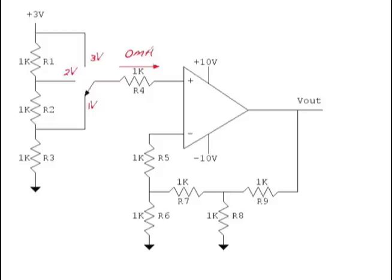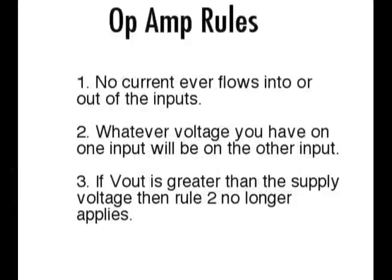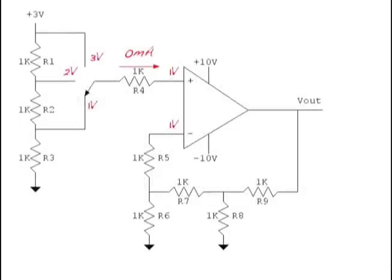Our rules say no current ever flows into or out of the inputs, so we don't have to worry about current flowing through R1, R2, and then into R4 into the op-amp — there will be no current there. Now that we know we have no current flowing through R4, that means no voltage drop, and therefore the voltage off of the voltage divider network coming through the switch — one volt — will appear on the positive input of the op-amp. And because op-amp rule number one says no current flows into or out of the inputs, that means there's no current flowing through R5, so we now know the voltage on top of R6 is one volt.